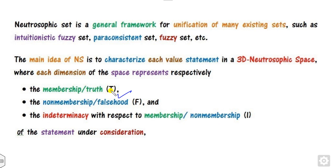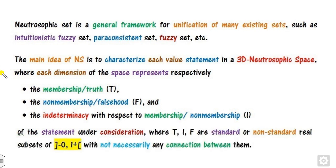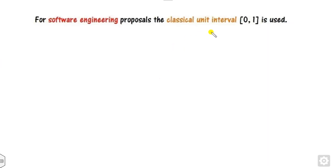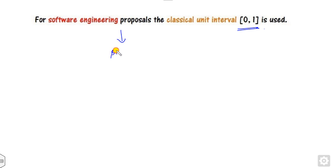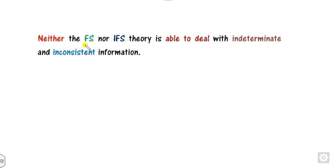These three degrees T, F, and I are defined under certain considerations — specifically, T, I, and F are non-standard real subsets. Since in day-to-day life we work on the standard closed interval [0, 1], a single valued Neutrosophic set is proposed, abbreviated as SVNS. This Neutrosophic set is a generalization of both the fuzzy set and the Intuitionistic Fuzzy Set.